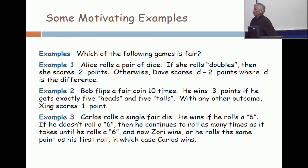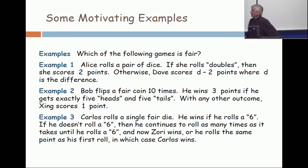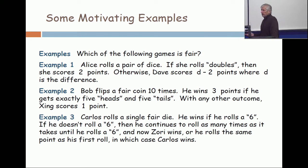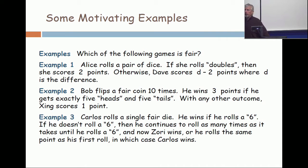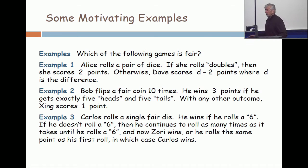Otherwise, Dave scores D minus two points, where D is the difference. So if the difference is one, Dave scores minus one — in other words, Alice still scores one. If the difference is two, like a four and a two or a five and a three, then it's a wash; nobody wins anything. But if the difference is three, like four and one or five and two, Dave wins one point. If the difference is four, Dave wins two points. And if the difference is five, Dave wins three points.